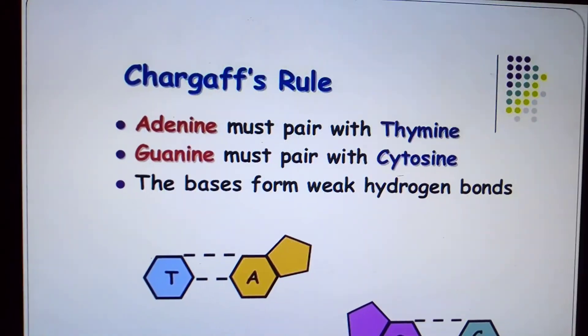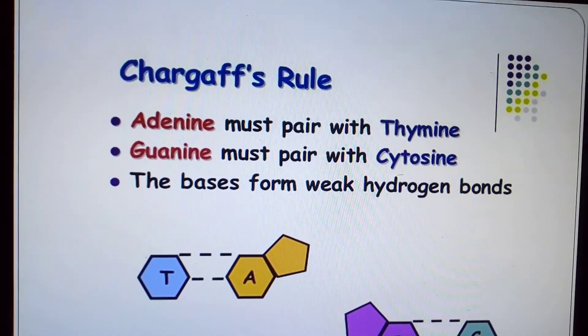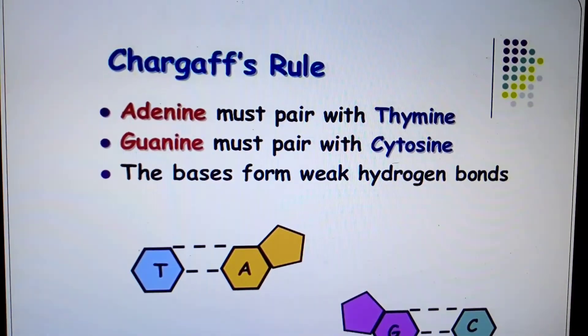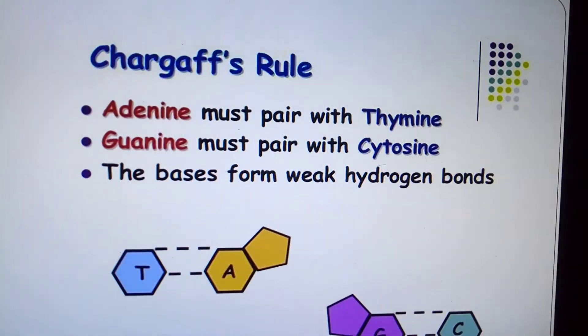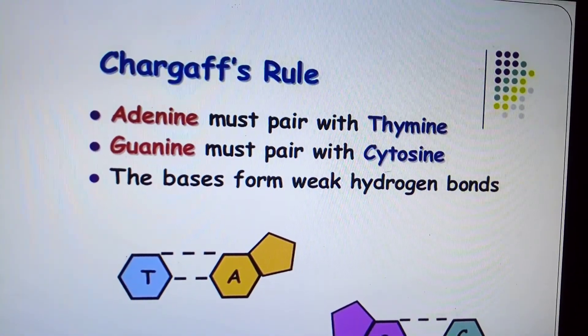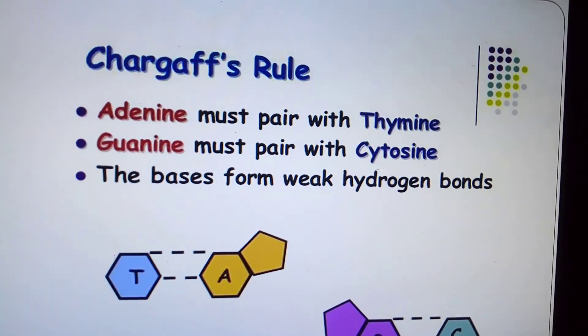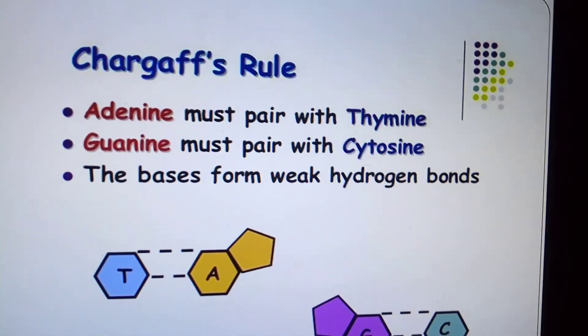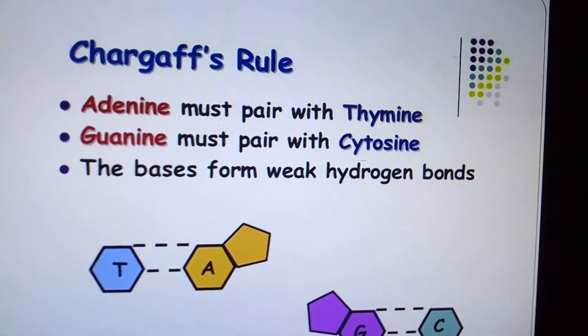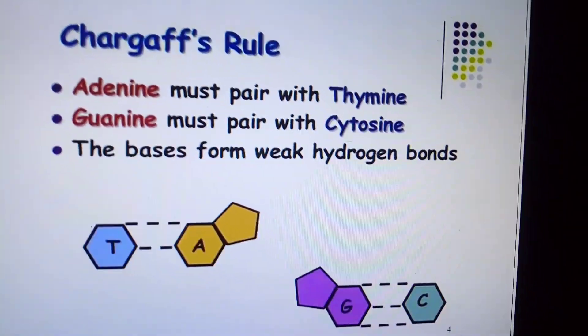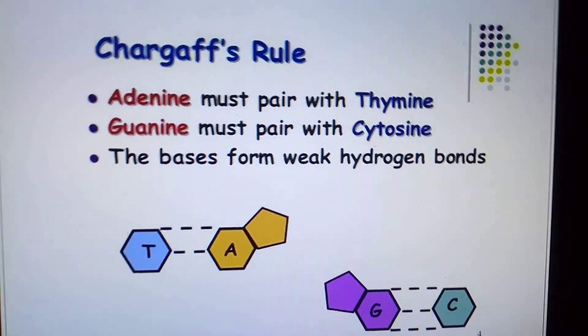Now we have Chargaff's rule. Adenine must pair with thymine, and guanine must pair with cytosine. These bases form weak hydrogen bonds. This is Chargaff's rule.